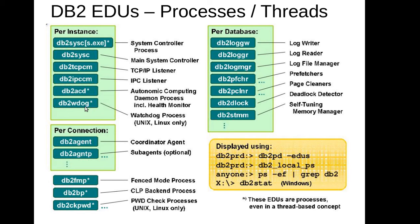db2wdog is the watchdog process, present only on Unix and Linux. When we start the instance, this process starts first and is responsible for starting db2sysc, db2tcpcm, db2acd, and other processes. Once db2wdog starts db2sysc - the main system controller - db2sysc in turn starts db2ckpwd, the check password process, which is responsible for authentication whenever an application tries to connect to the database.